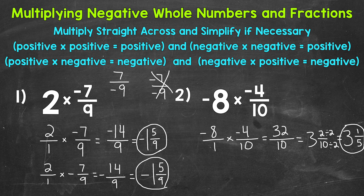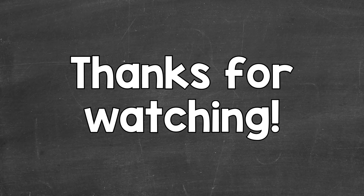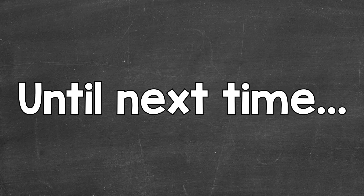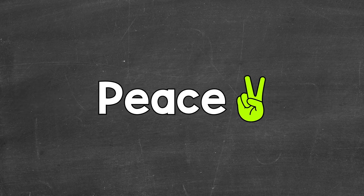So there you have it — that's how you multiply negative whole numbers and fractions. We had a negative times a negative, which with the same signs gives us a positive result. I hope that helped. Thanks so much for watching. Until next time, peace.